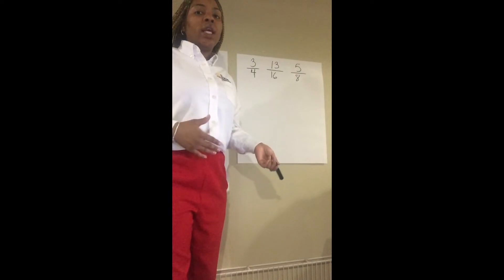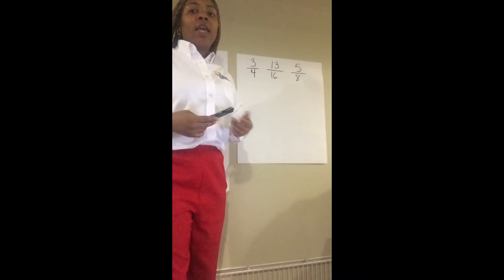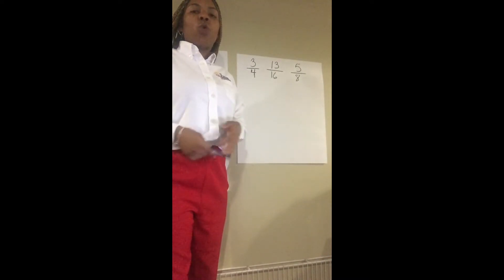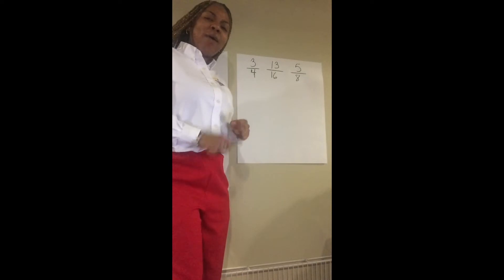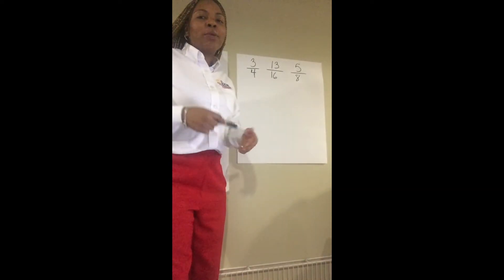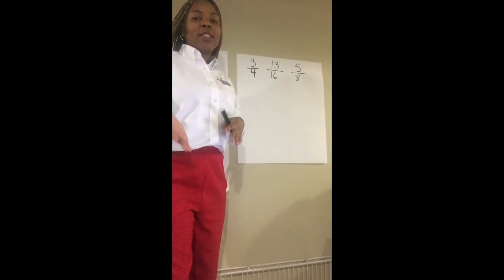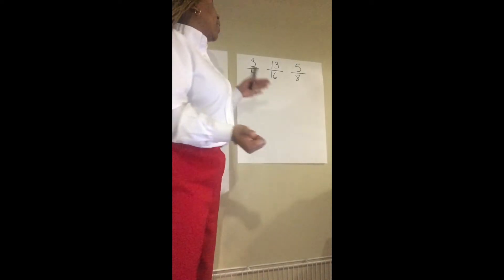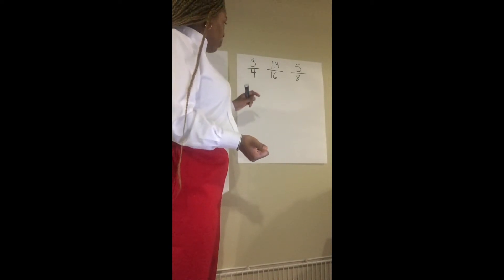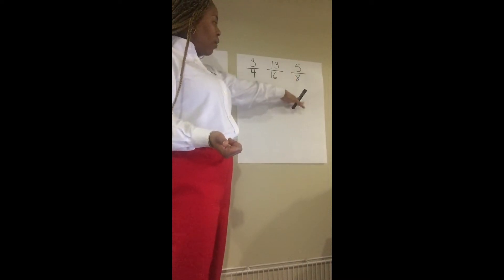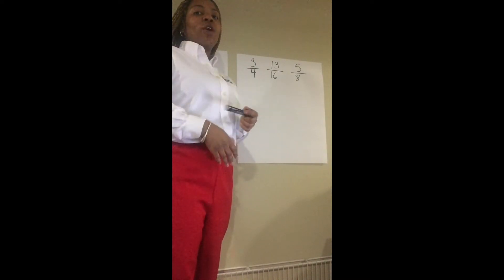We really didn't talk about that when we did comparing with fraction strips, because fraction strips gave you the visual — we could see even with different denominators which fraction was greatest or which fraction was less. So now we're going to find the common denominator. Remember how I always stressed the importance of knowing our multiples and our factors? Looking at this, we can see that four and eight are factors of sixteen. Yes, four and eight are both factors of sixteen, so there we have it — we just found our common denominator.